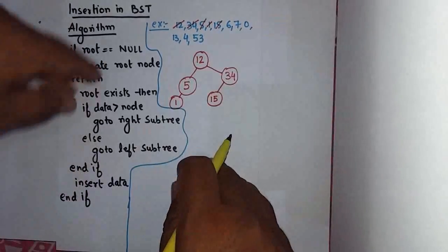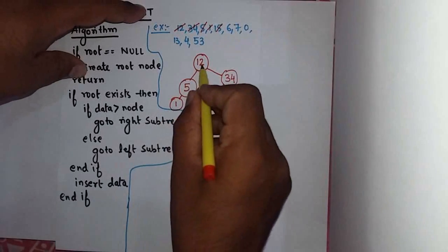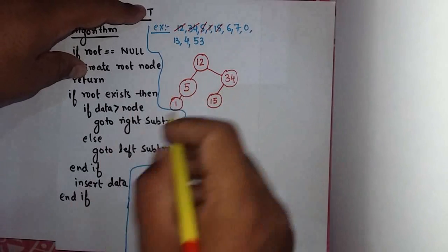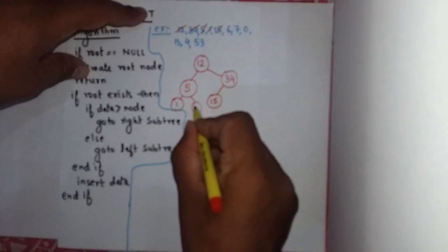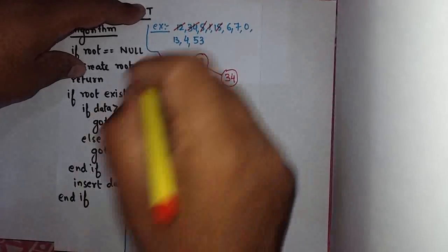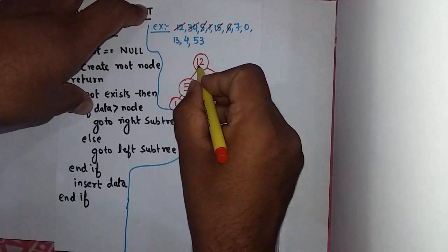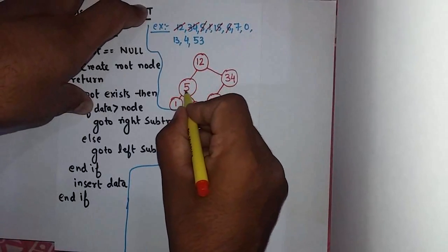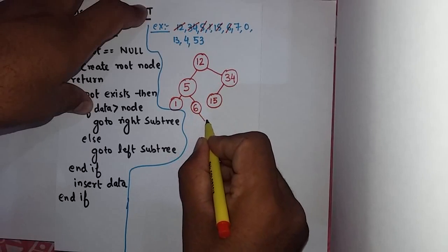15 is already covered. Now 6, since 6 is less than 12 it will go to the left side but it is greater than 5, so 5's right is 6.